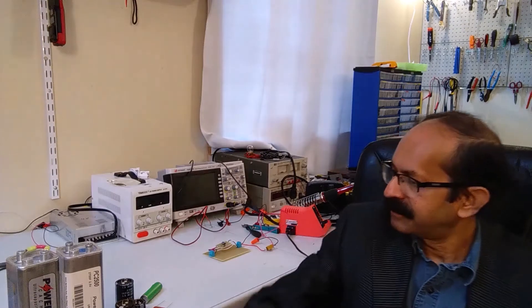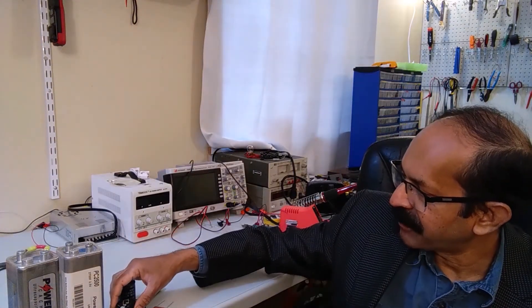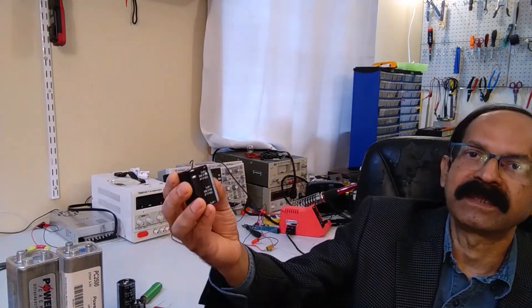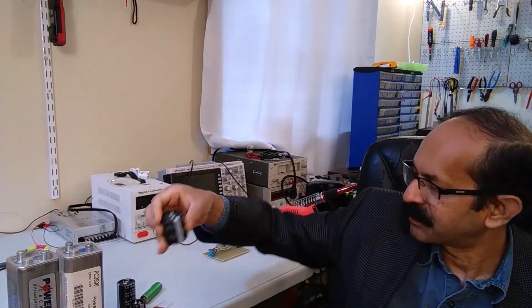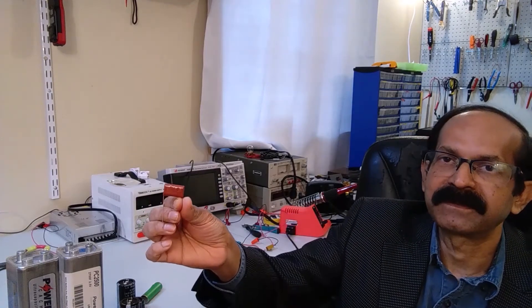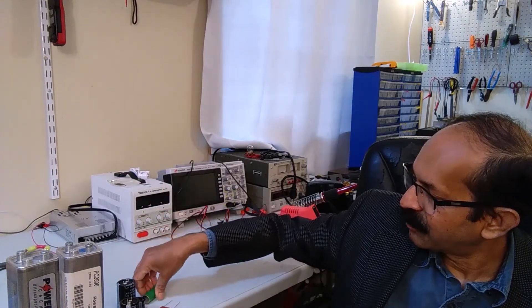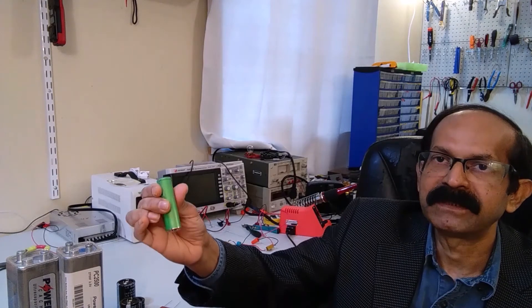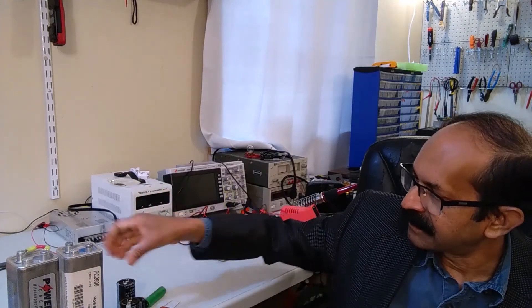As you can see on my table, I have several capacitors. These are called electrolytic capacitors, with values in the range of thousands of microfarads or so. There is a small capacitor called ceramic capacitor and one lithium-ion rechargeable battery, and here the big ones.